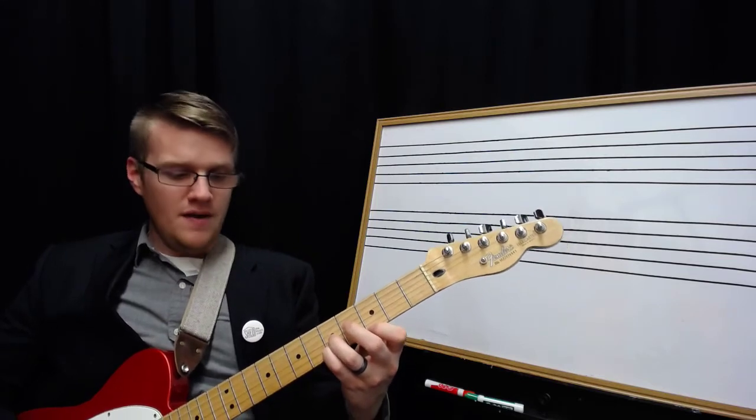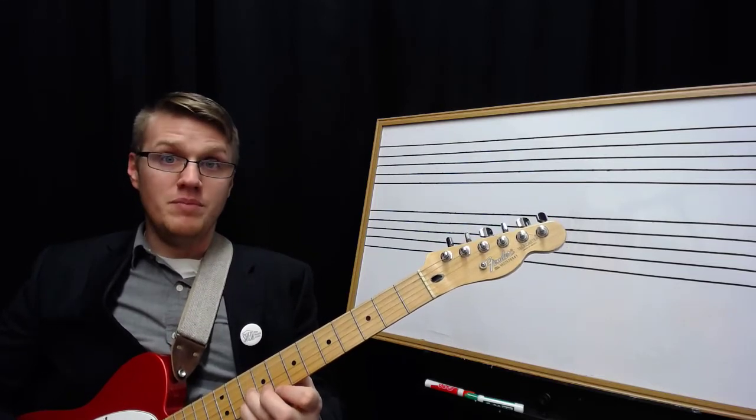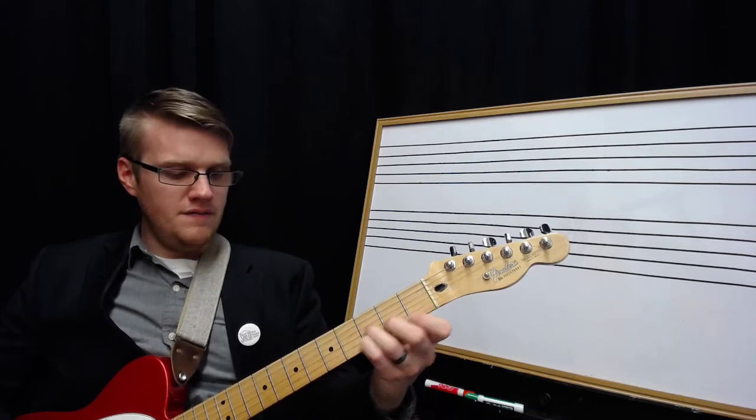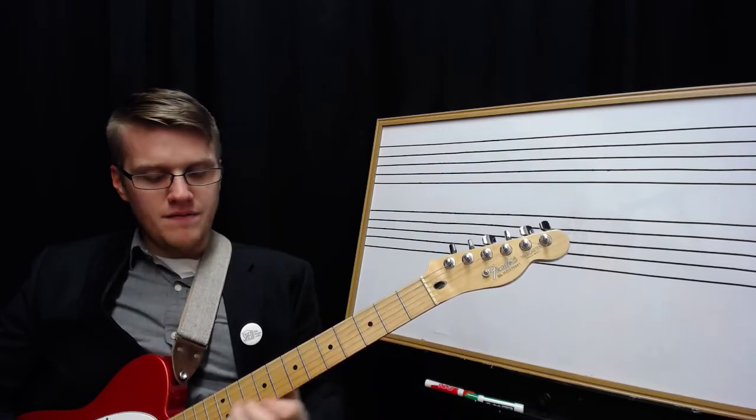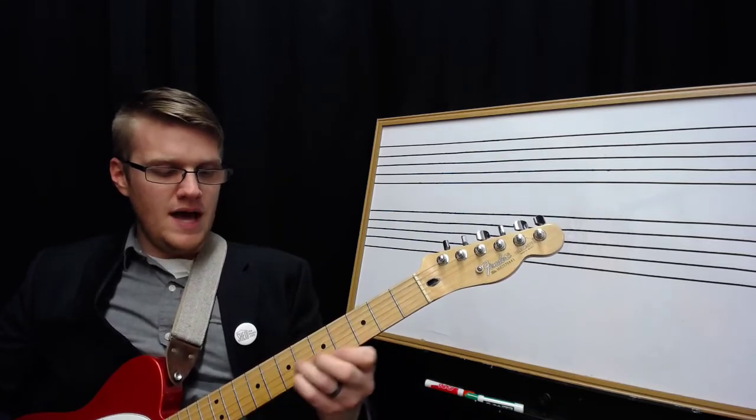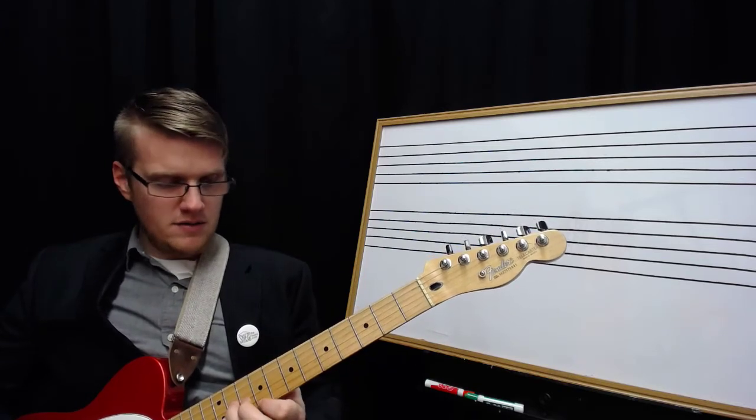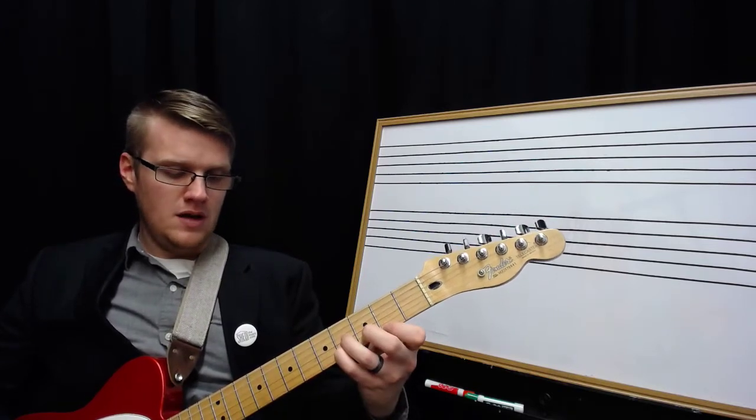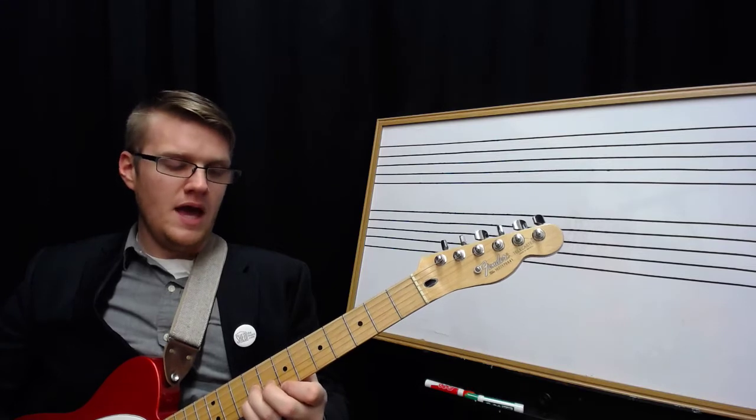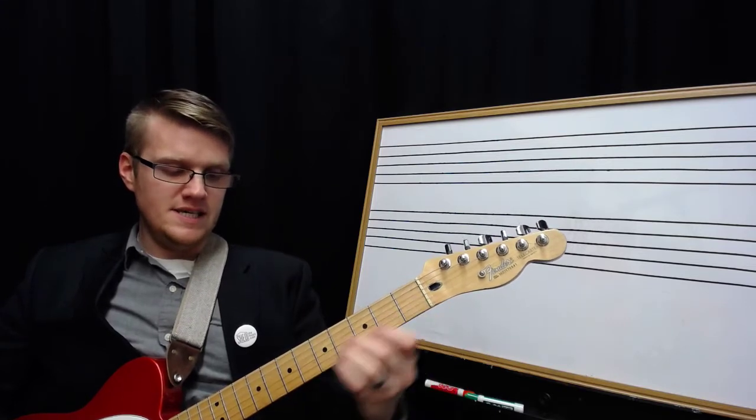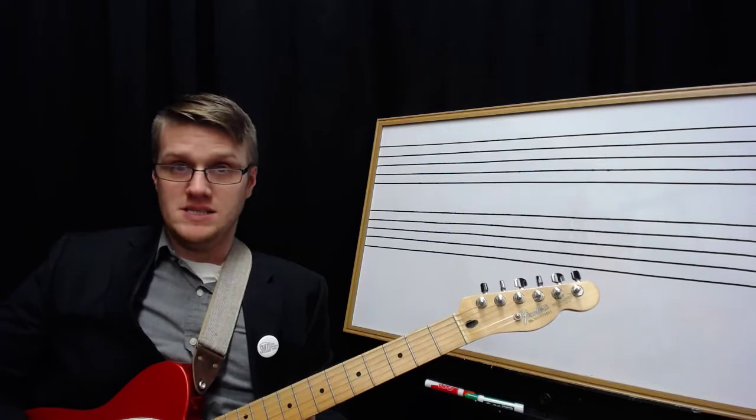So this is C. Then I have F, B-flat, E-flat, A-flat, D-flat, G-flat, B, E, A, D, and G. And then I go back to C.